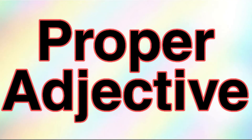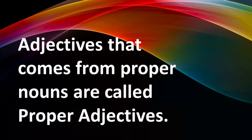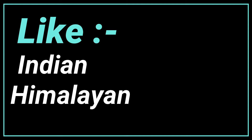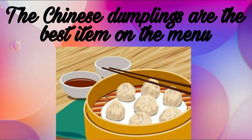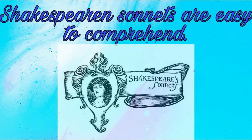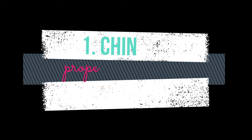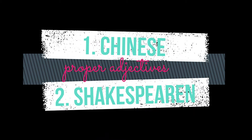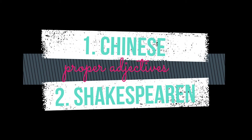What are proper adjectives? Adjectives that come from proper nouns are called proper adjectives, like Indian, Himalayan. For example: 'The Chinese dumplings are the best items on the menu.' 'Shakespearean sonnets are easy to comprehend.' So here, words like Chinese and Shakespearean signify the proper adjectives.